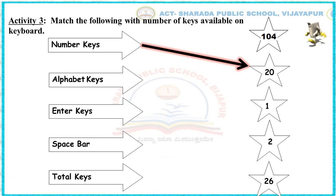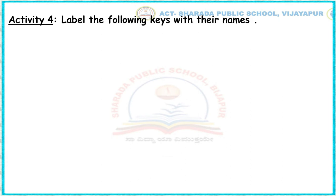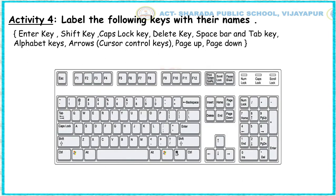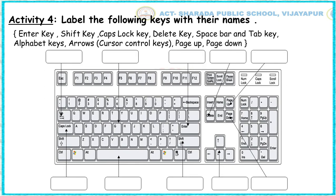We will move to Activity Number 4. Label the following keys with their names. Names provided are: Enter Key, Shift Key, Caps Lock Key, Delete Key, Spacebar, Alphabetic Keys, Arrows, Cursor Control Keys, Page Up and Page Down. Here you can see the image of the keyboard with 10 boxes, each pointing towards a particular key so you can identify it and write the name in the given box. For example, the first box is pointing towards the Tab Key, so you write Tab Key there.